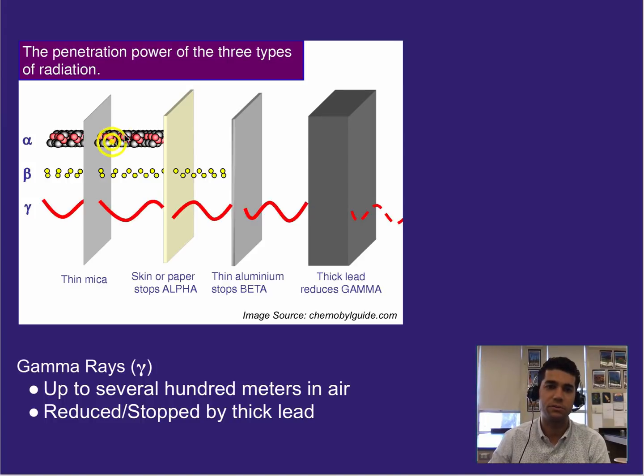However, alpha particles can be extremely dangerous if it ends up in a food source or something along those lines. Beta particles also dangerous too, but oftentimes used in medical devices, mainly because it can go through skin. So skin doesn't stop it. We can use it to help trace the path of a chemical going through somebody's body or something along those lines.